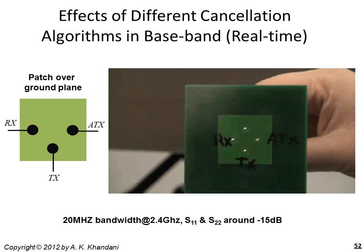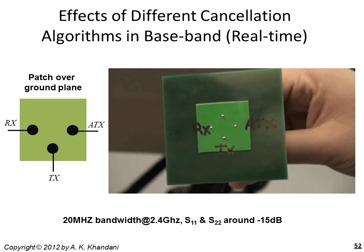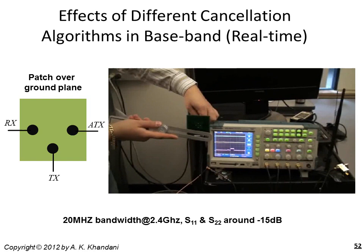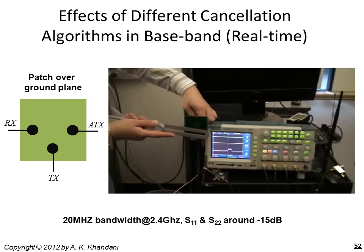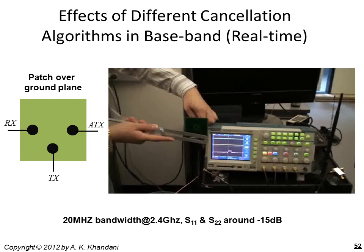Here we have a patch antenna including the transmitter, receiver, and auxiliary transmitter all merged together. A metallic ruler is brought close to the antenna to change the coupling. The lowest signal shows the transmit energy; the middle signal showing the effect of the first algorithm's cancellation fluctuates quite significantly, but the top signal showing the final cancellation in the baseband has a stable performance.